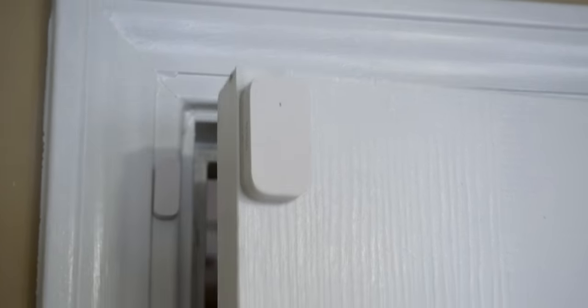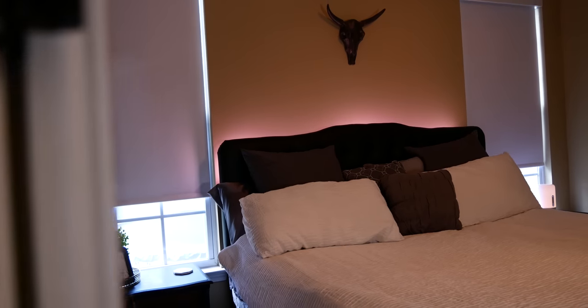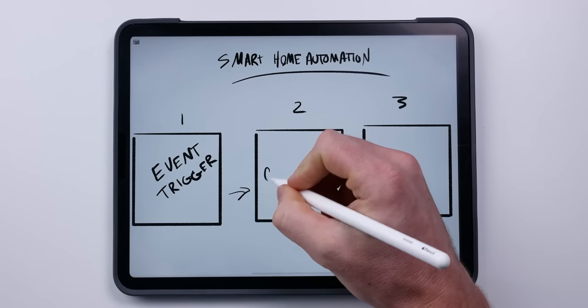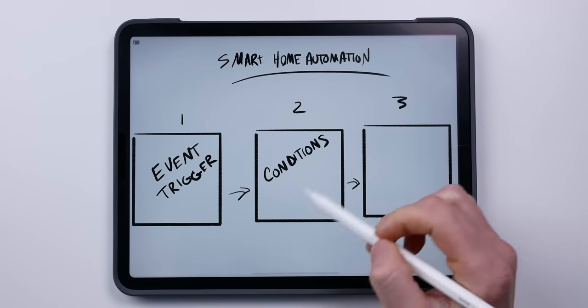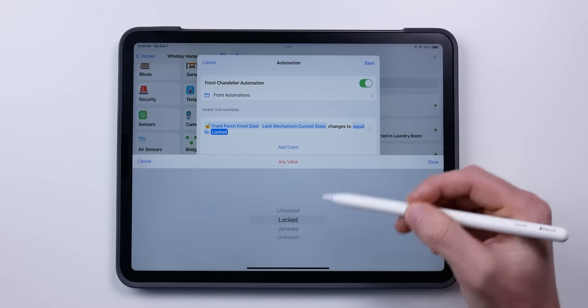Automations are what really unlocks the true power and potential of a smart home. Today I want to share some pretty basic concepts and ways that you could take your HomeKit automations to the next level. This is sort of going to be a deep dive into automations, but we're going to keep it all very simple. We'll discuss some basic concepts like using multiple triggers, conditions, and third-party apps to supercharge your automations.